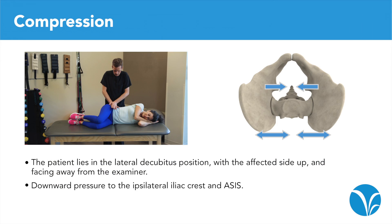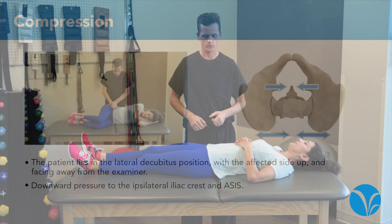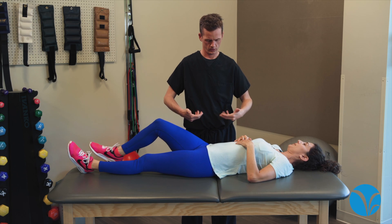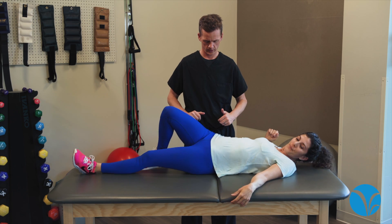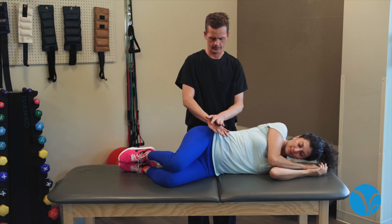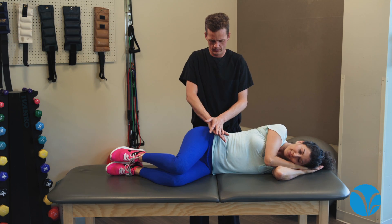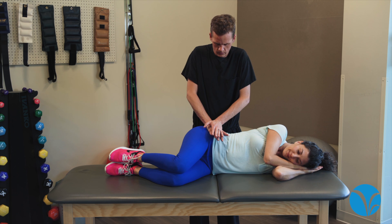In the compression test, the patient lies in the lateral decubitus position with the affected side up and facing away from the examiner. Downward pressure is applied to the ipsilateral iliac crest and ASIS. The test is considered positive if the patient feels pain in the SI joint on the contralateral side.